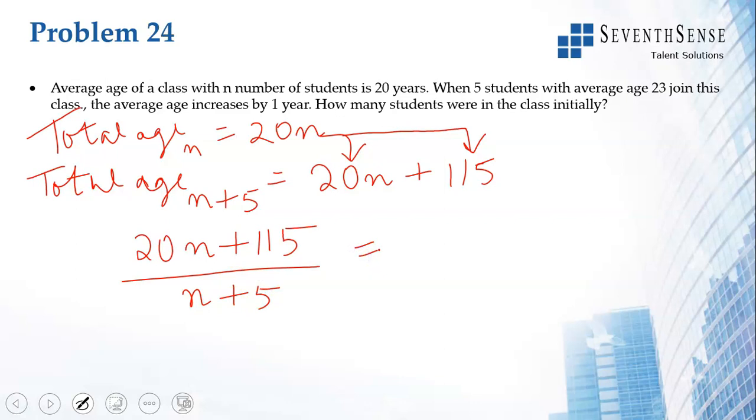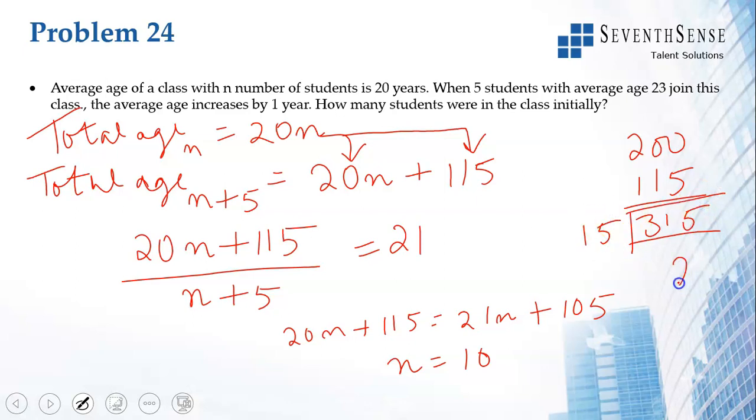n equals 10. So we have 10 students. If you want to verify: 10 students with 20 years average, sum of their age is 200. Five students come in with average age of 23, so 5 times 23 is 115. The total is 315, and 315 divided by 15 gives the value as 21. You can verify the average increases by 1. This is the verification point. So we have 10 students initially in the class.